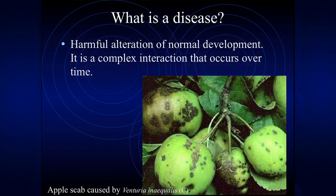First, you need a definition of a disease. There are probably as many definitions as there are people who work on diseases — that includes especially the medical profession. What I'm calling it here is a harmful alteration of normal development — a complex interaction that occurs over time. If somebody sprayed a plant with a chemical and it fried, that's a different thing; that's not a disease. It's usually caused by a living organism, something that can reproduce in the host.